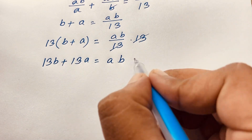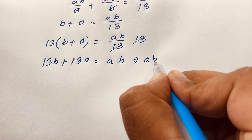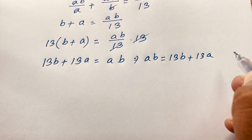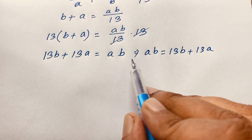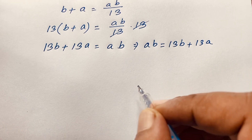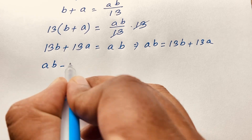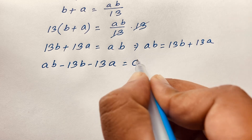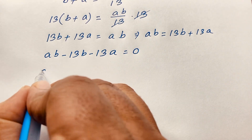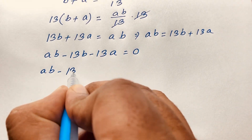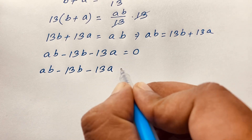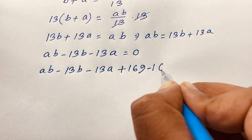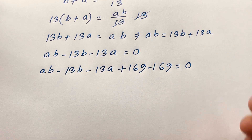Expanding, we get 13v plus 13a is equal to av. Rearranging: av minus 13v minus 13a is equal to 0. Now I add 169 to both sides and also subtract 169, so: av minus 13v minus 13a plus 169 minus 169 is equal to 0.